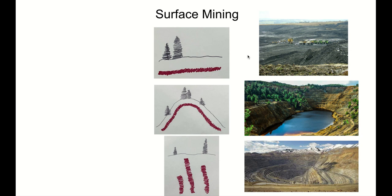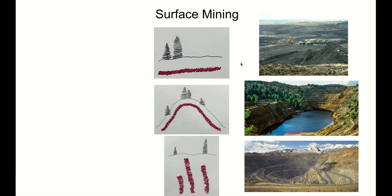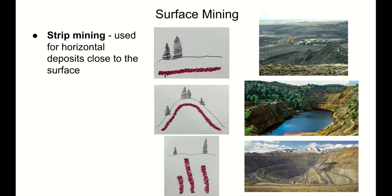When choosing a type of surface mining, we need to choose based on the orientation of our mineral deposit. Here are three different mineral deposit scenarios. In the first, we have a horizontal deposit close to the surface — we would use strip mining, simply stripping off this horizontal layer of overburden to expose our mineral seam. Here's a picture of strip mining — as far as the eye can see, we've got soil and we're about to expose the mineral-rich layer underneath.